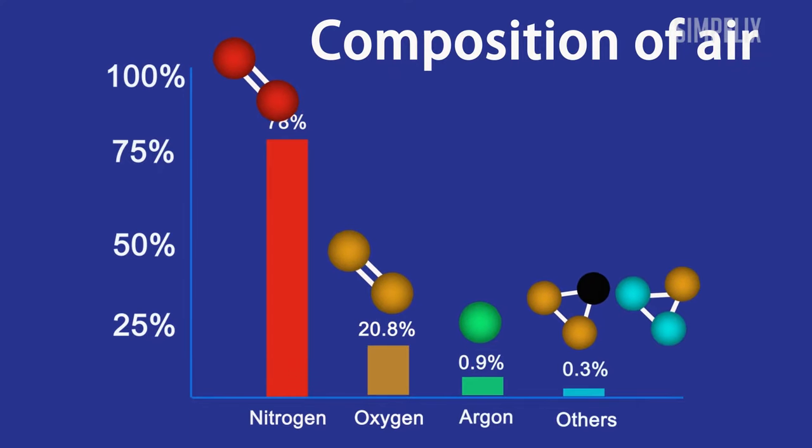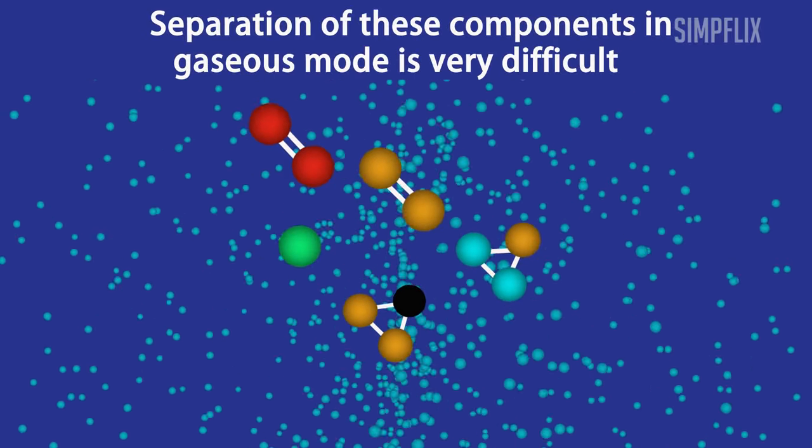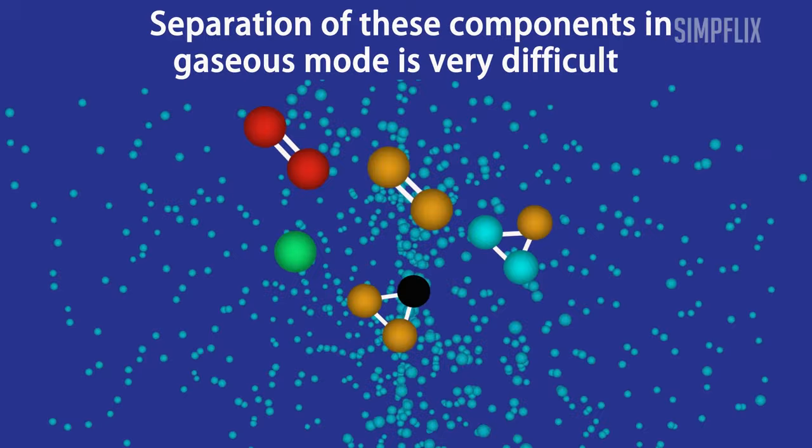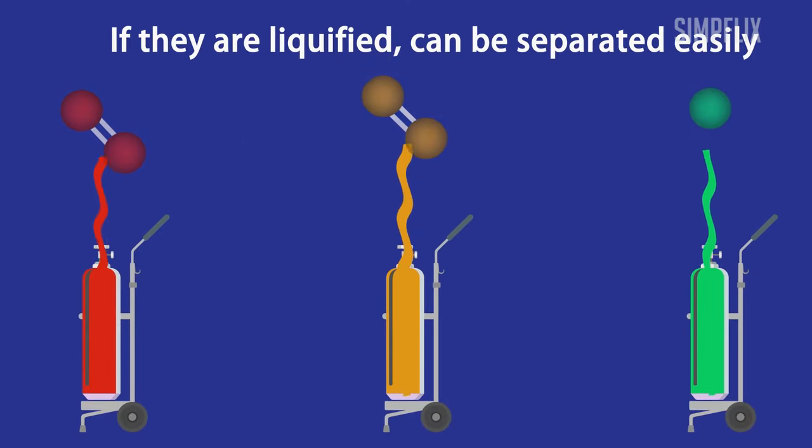All these components exist in gaseous mode and it is very difficult to separate these components in gaseous mode. Conversely, if these components are liquefied, then it is easy to separate them.